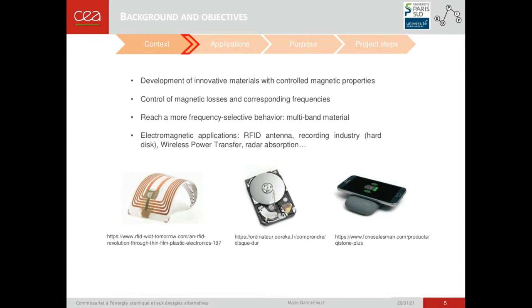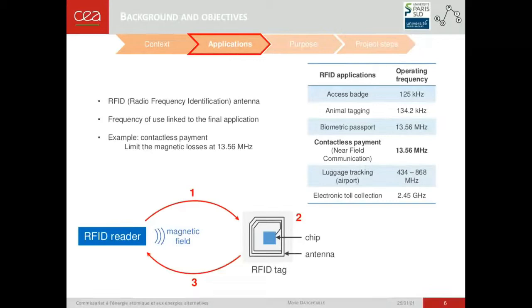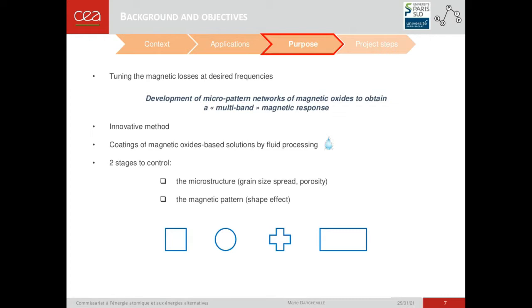I would like to focus on more specific applications in the context of RFID. RFID possesses a lot of applications, for example in contactless payments, with an operating frequency at around 13 megahertz. The aim here is to limit the magnetic losses of the material at this operating frequency. In order to tune the magnetic losses at desired frequencies, the project deals with the development of micropattern networks of magnetic oxides by FRID processing.